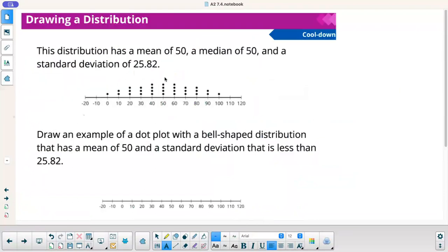The last thing. The distribution has a mean of 50 and a median of 50 and a standard deviation of 25.82. Draw an example of a dot plot with a bell-shaped distribution that has a mean of 50 and a standard deviation that is less than 25.82. We're going to have to move our data closer to the mean. Let's count how many dots are in here. This is 12 plus 6 is 18, 24. It was actually 30 dots total.